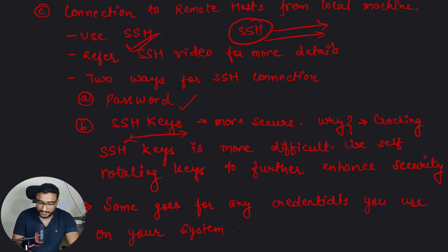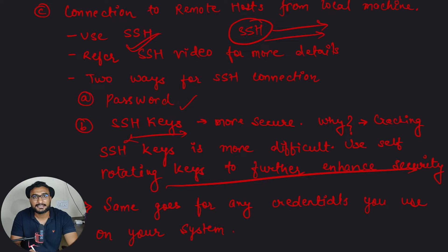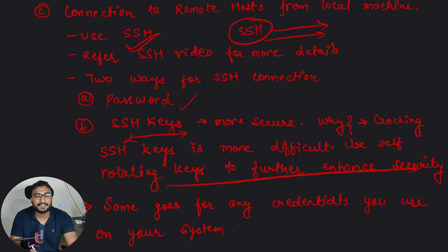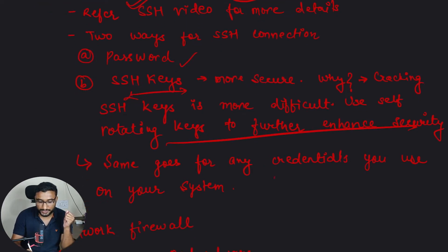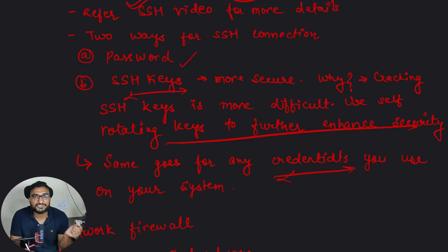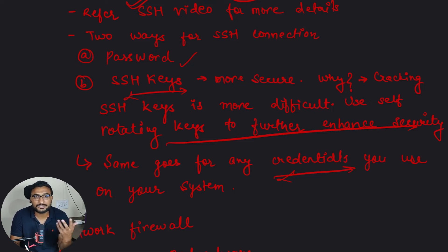SSH keys are more difficult to crack, and you can use self-rotating keys so that keys are rotated on a weekly, 30-day, or 90-day basis — you can define that rotation period. The same policy applies to credentials. Many organizations require a particular user to change their password every 90 or 30 days so that it is not easy to crack.